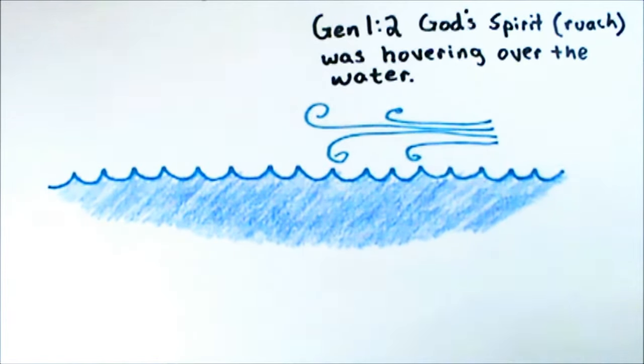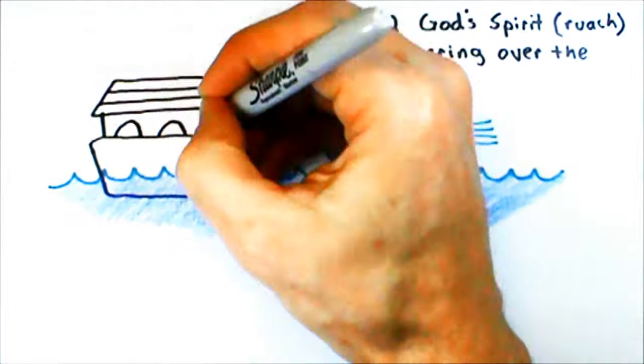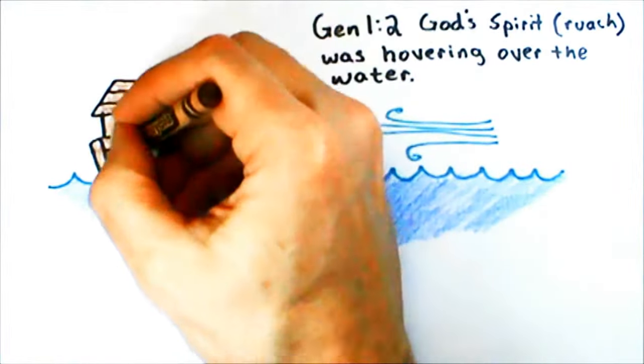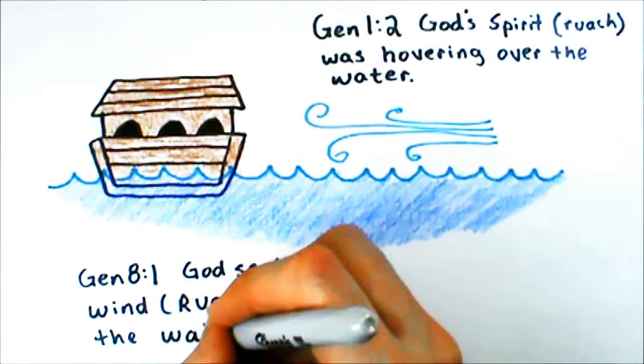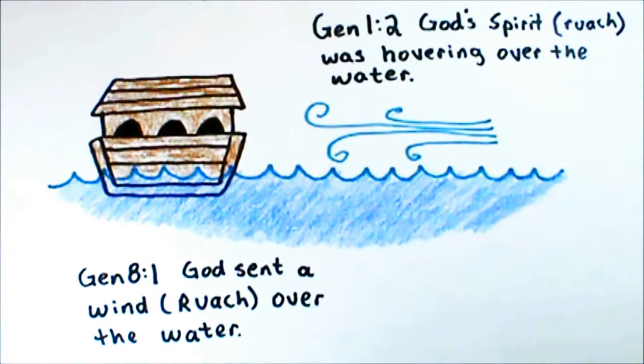But later on in the Noah's Ark story, after water has swept away all life from the earth, and God wants to recreate everything fresh and new, it says he sent a wind, his ruach, over the water. And the point is, whenever God creates, he does it by sending his ruach, his spirit.